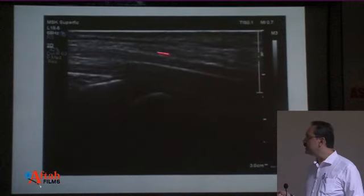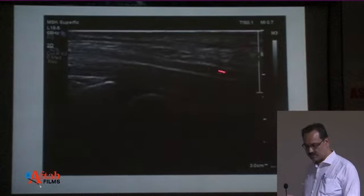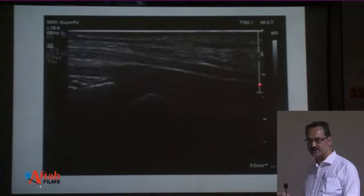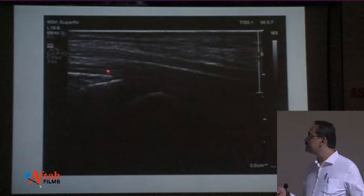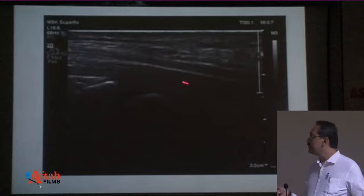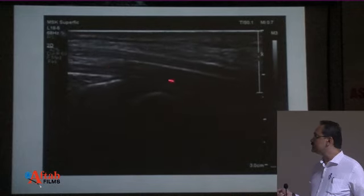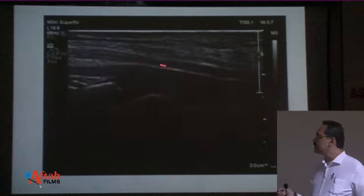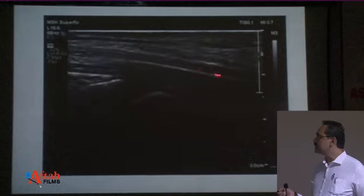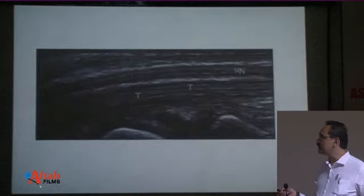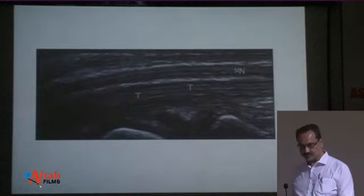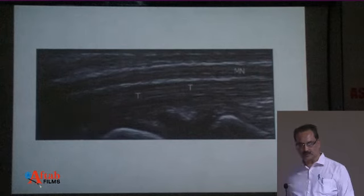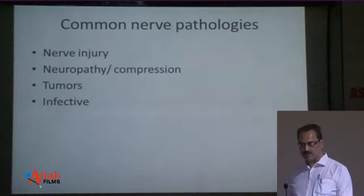This shows the median nerve in transverse section and in longitudinal section, alongside adjacent muscle fibers. You can see there is discontinuity in the muscle fibers while the nerve fibers show continuity. This is also shown as a static image.